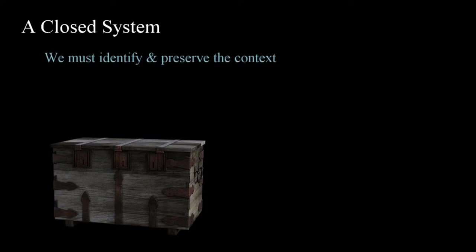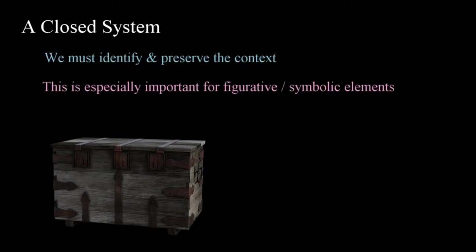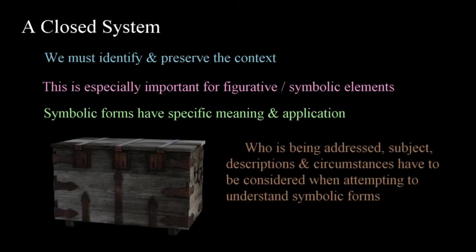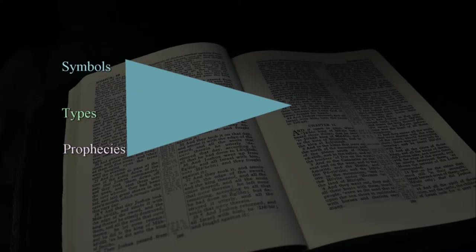The Bible is a closed system. One thing stressed in the previous series was the importance of preserving context. This holds true for understanding symbolic and figurative elements as well. Prophecies in representative forms, by their nature, have specific meaning and application determined by their context. Who's being addressed? What's the subject under consideration? What circumstances are being described or are in existence? These are things that have to be considered when attempting to understand images and figurative forms in the Bible. All of these are directed towards something specific — a promise from God, an event that will occur, or in the case of types, something only realized when we take both the Old and New Testaments into account.